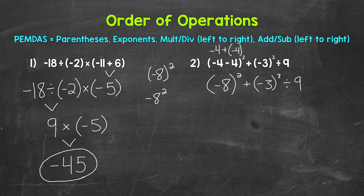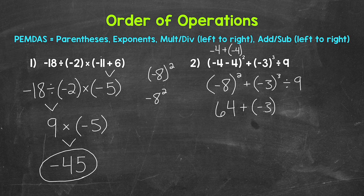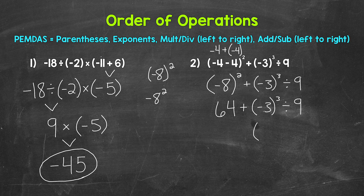So now we have negative 8 squared plus negative 3 cubed divided by 9. No more parentheses. Do we have any exponents? Yes, two of them. Starting with negative 8 squared: negative 8 times negative 8 — a negative times a negative equals a positive — so this gives us positive 64. Bringing down everything we did not use: 64 plus negative 3 cubed divided by 9. Now we do negative 3 cubed: negative 3 times negative 3 times negative 3. Negative 3 times negative 3 is positive 9, then positive 9 times negative 3 gives us negative 27.